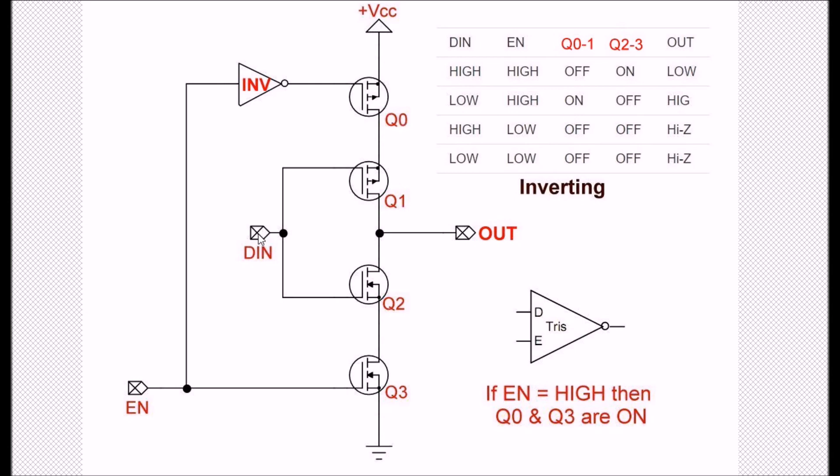If we make the input low, it's going to switch off Q2 and switch on Q1. DIN low with the enable high: Q0 and 1 will turn on, Q2 and 3 will turn off, and I will get a high output. That creates a path through Q0 and Q1.